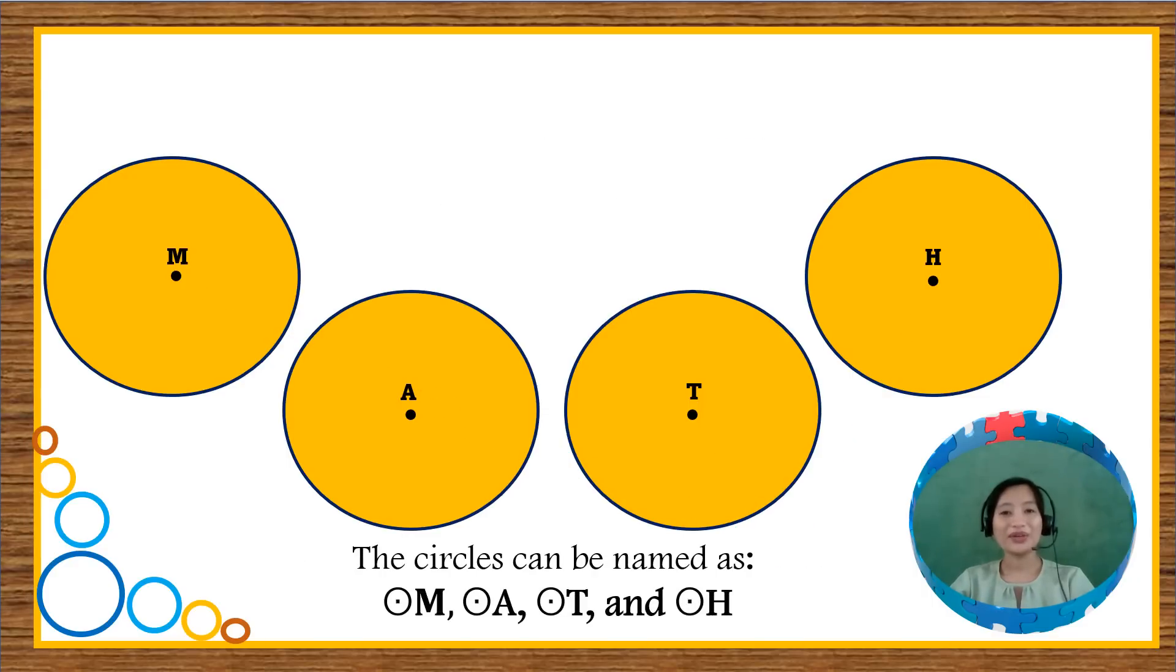Now there is a way for us to notate circles, or for us to name circles. As you can see here, we use the symbol circle with a dot inside, and then the name of the circle. So that is read as circle M. This one is read as circle A, circle T, and circle H. That is our notation for circle.